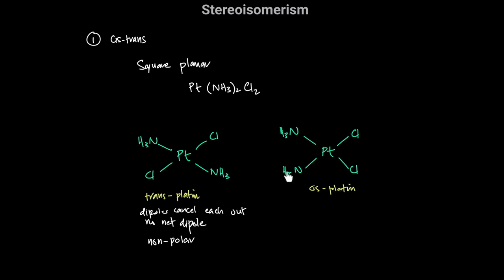In the case of cisplatin, we have chlorine on one side of the molecule and ammonia on the other side, so you don't have identical groups canceling each other out. The dipoles do not cancel, so cisplatin has a net dipole — it is polar.